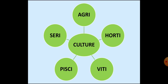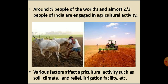Farming refers to the science and art of cultivation on the soil, raising crops and rearing livestock. Sericulture refers to commercial rearing of silkworm. Pisciculture is the breeding of fish in specially constructed tanks. Viticulture means cultivation of grapes, and horticulture means growing vegetables, flowers and fruits for commercial use. In the world, almost 50 percent of the people are engaged in agriculture, and in India, two-thirds of the people depend on agriculture directly or indirectly for their livelihood.